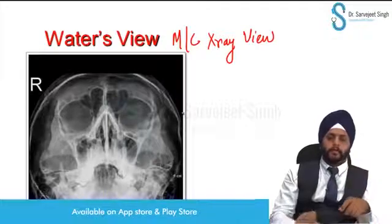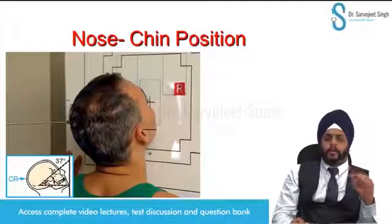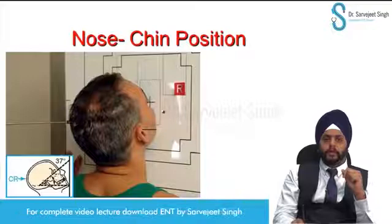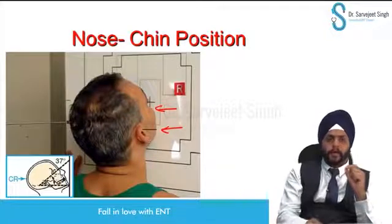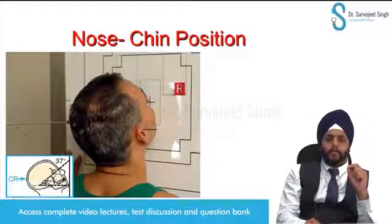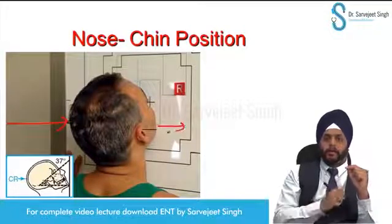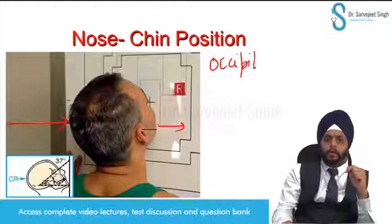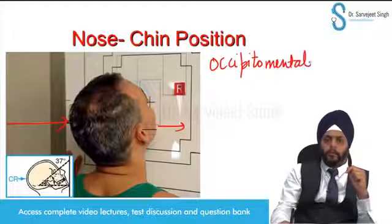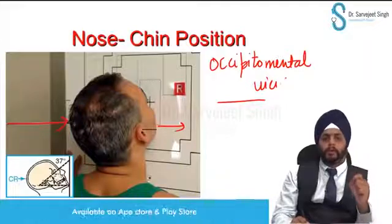In Water's view, we make the patient stand facing the X-ray plate. The patient's nose and chin are both touching the X-ray plate. We give an X-ray beam from behind and it comes out from the mentum. This is known as the occipitomental view — also called nose-chin position.